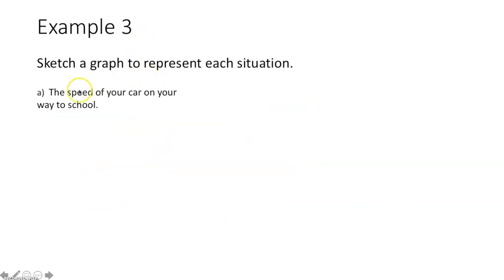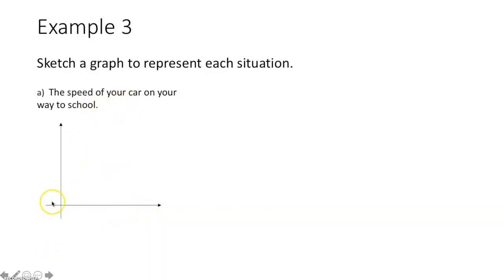Example 3 says: sketch a graph to represent each situation. The first situation is the speed of your car on the way to school. We have an x-axis and a y-axis — x is our independent variable, y is our dependent variable. Along the x-axis we put time in minutes, because a drive to school takes around 10 to 15 minutes. Along the y-axis we put speed in miles per hour.